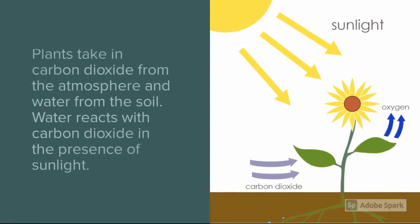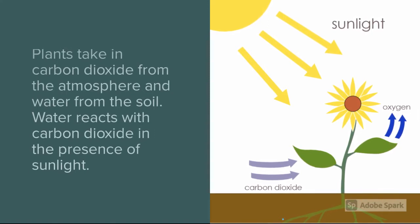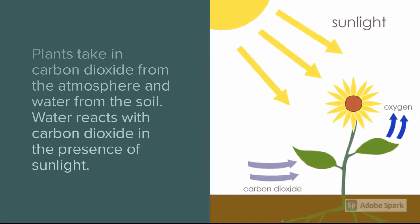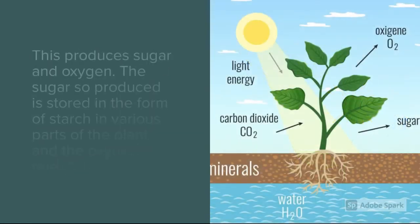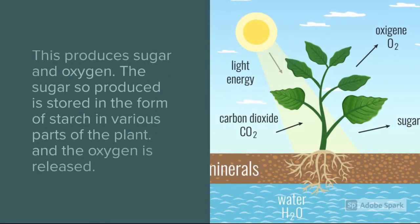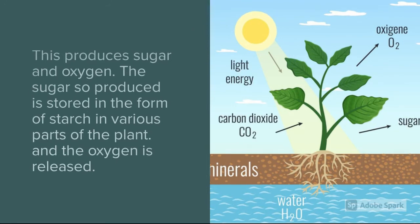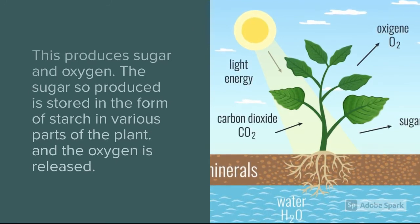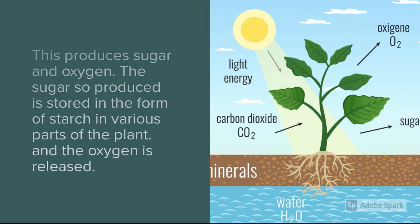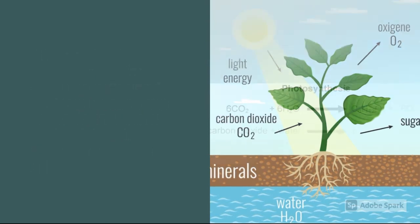Plants take in carbon dioxide from the atmosphere and water from the soil. The water reacts with carbon dioxide in the presence of sunlight, producing sugar and oxygen. The sugar so produced is stored in the form of starch in various parts of the plant, and the oxygen is released.